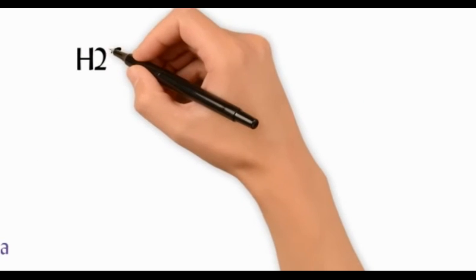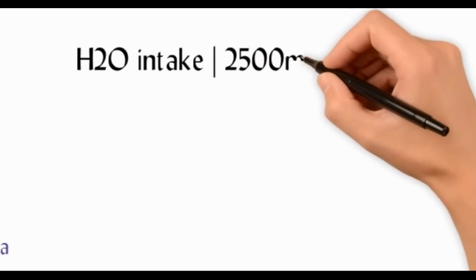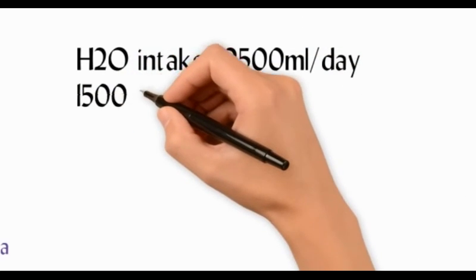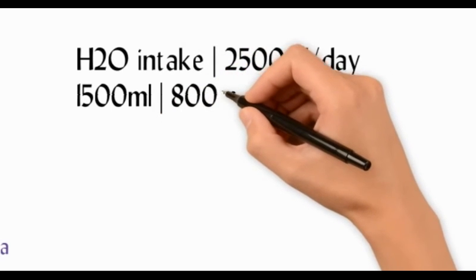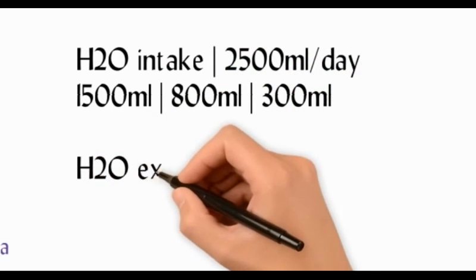For a 70 kilogram individual, the average intake remains 2.5 liters a day. One brings 1.5 liters of water, obtains around 800 mL from solid food, and 300 mL is the water of oxidation released when carbohydrates are metabolized.